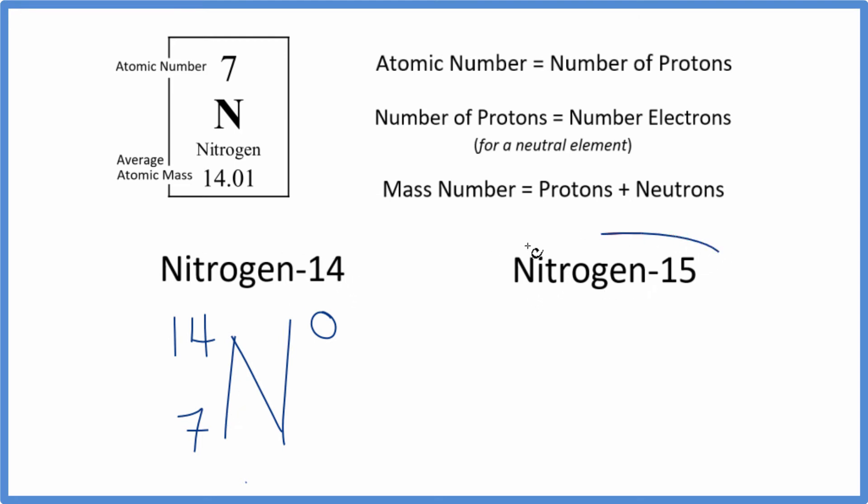Pause and give nitrogen-15 a try. So we write the symbol N. The mass number, that's the 15. That goes here. And then the atomic number, that's 7. The atomic number won't change for nitrogen. Nitrogen will always have an atomic number of 7 because it always has 7 protons.